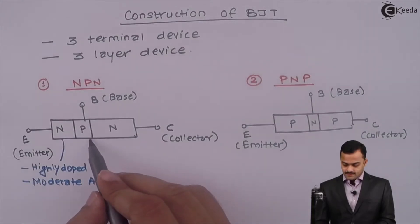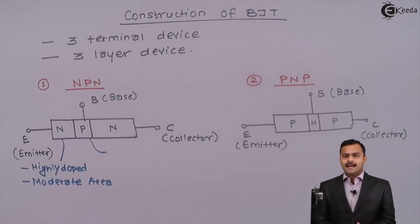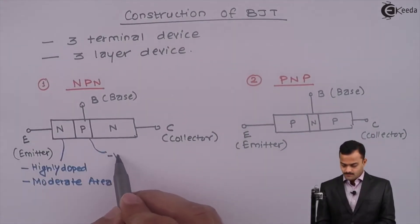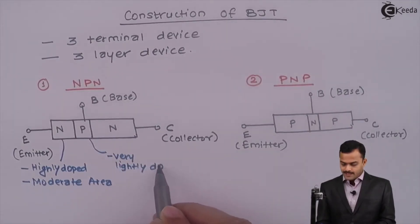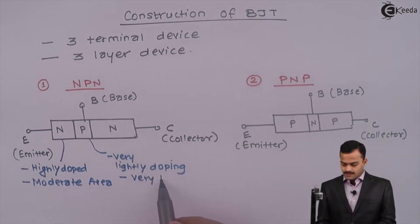Base is very lightly doped. Doping means adding impurity, either trivalent or pentavalent. And this area is very less.